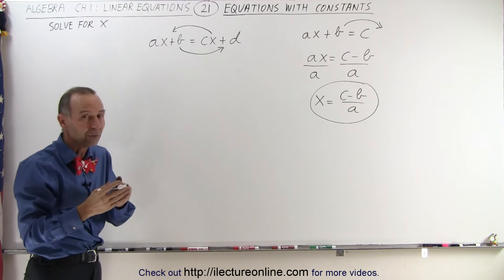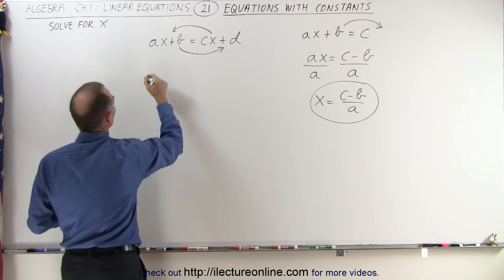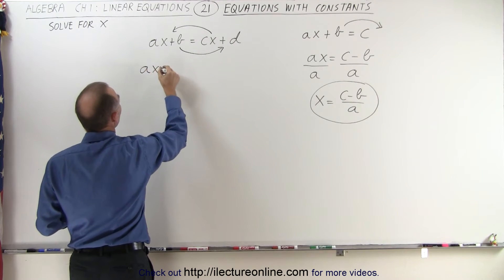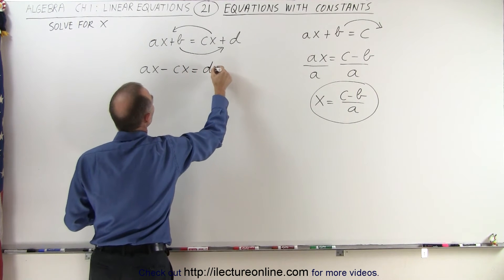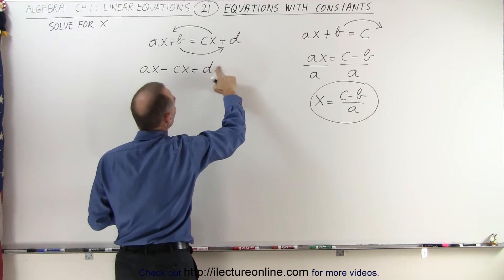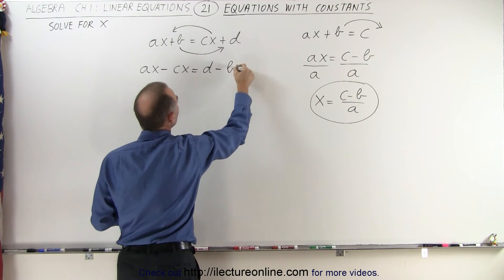Again, when they cross the equal sign their sign changes, so this becomes AX minus CX is equal to D, oh not plus because the B moves across, so this becomes minus B.